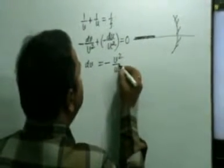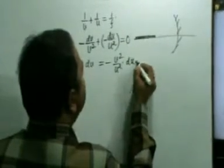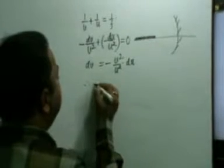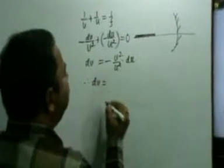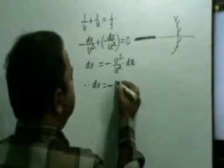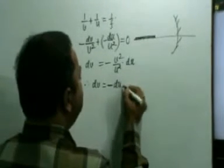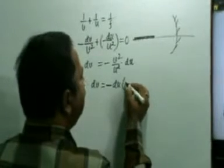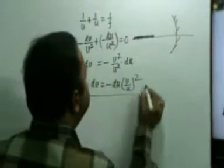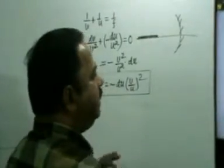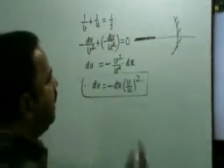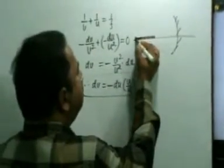From this we get dv = minus v²/u² into du. Now du is the change in u, meaning the length of the object. du = u2 - u1.